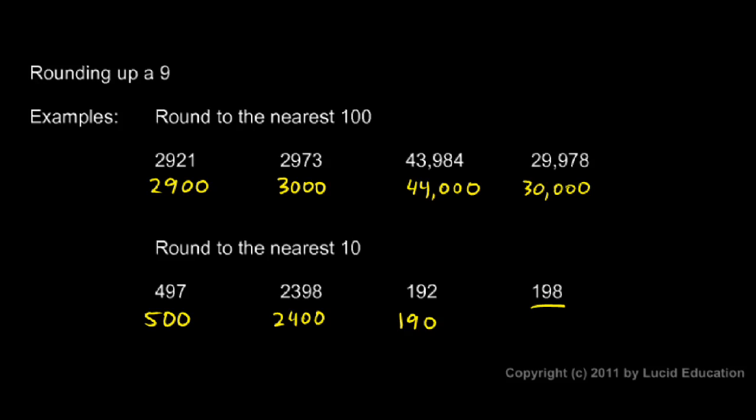In this case though, 198, I'm rounding to the nearest ten. My next digit is 5 or more, so I round up. So instead of 190, it's 200.